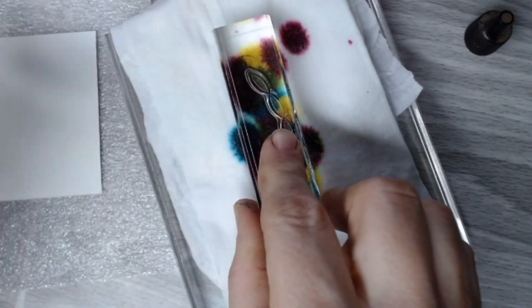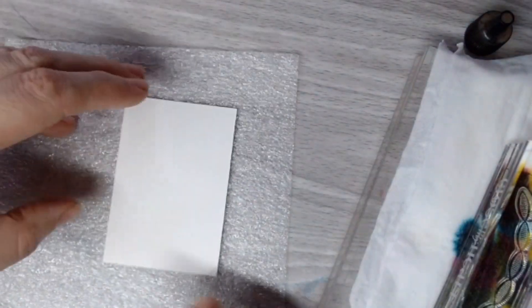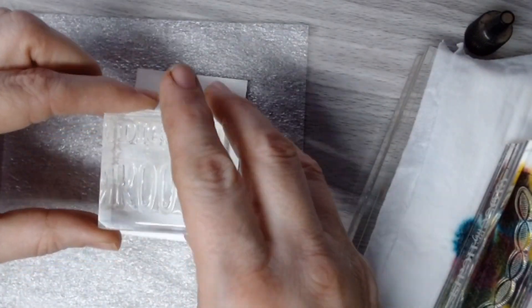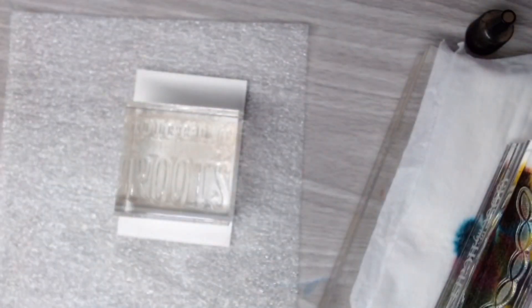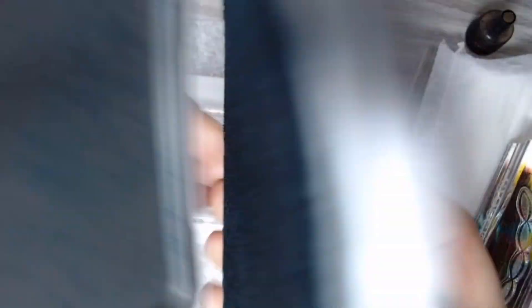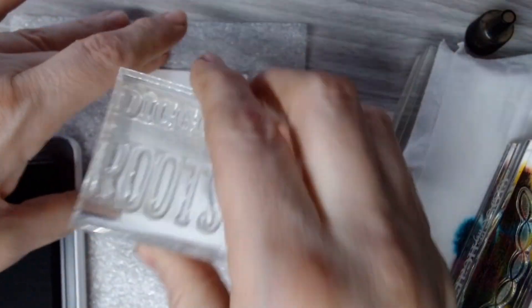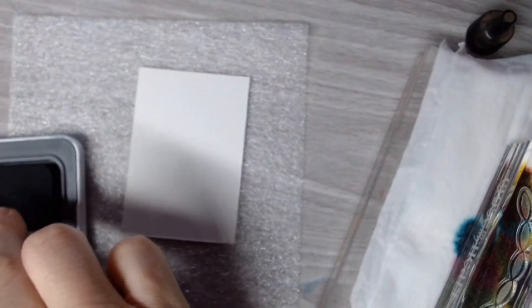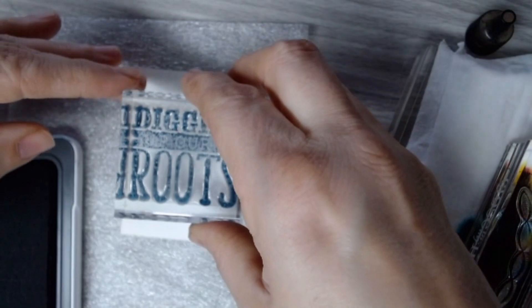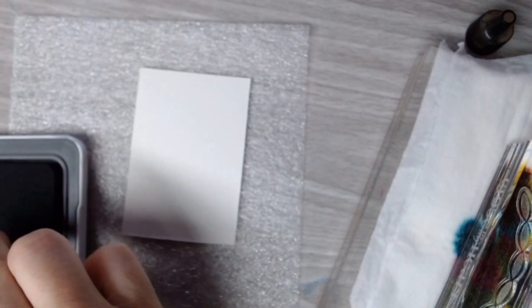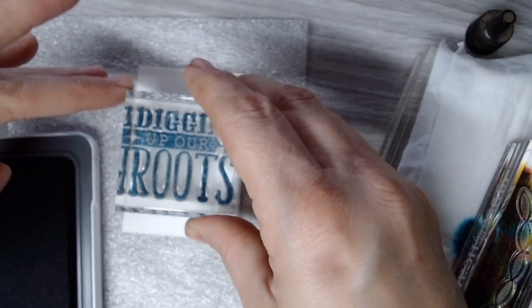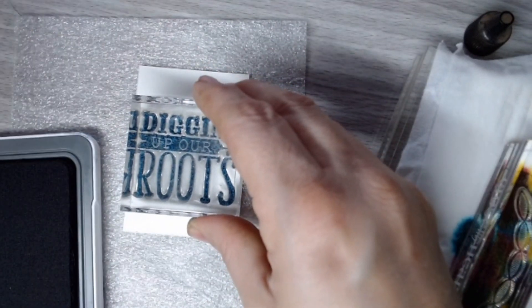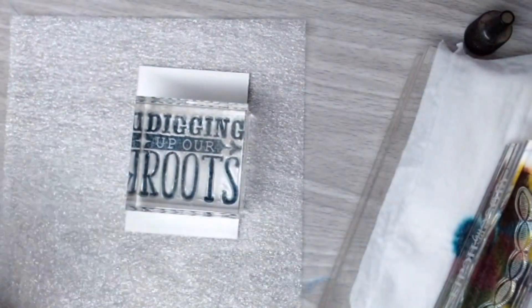So I used this stamp, and I ended up doing a shaker card makeup. I used some Distress Oxides and colored it, and they are really beautiful. I then used the stamp that says digging into your roots, and I think it's appropriate. I added a sweet embellishment and it turned out great.